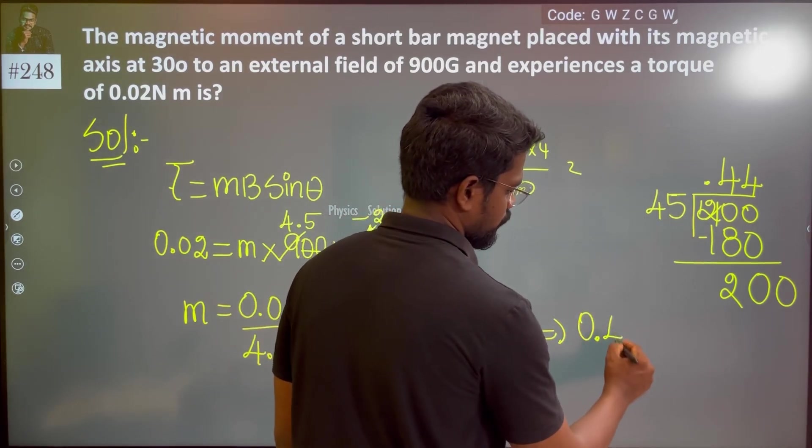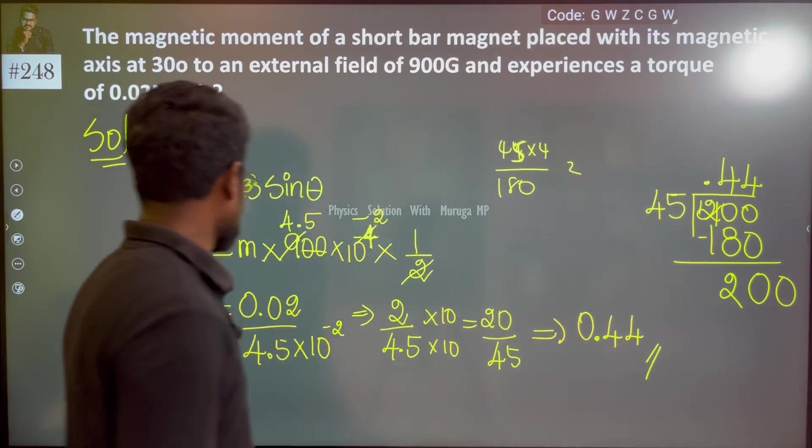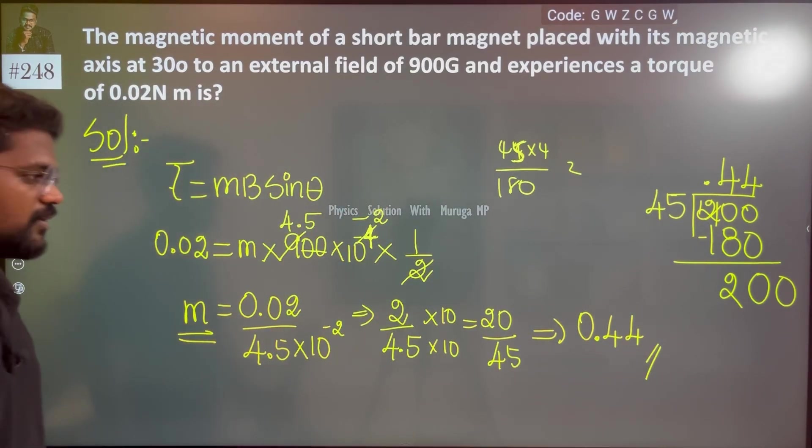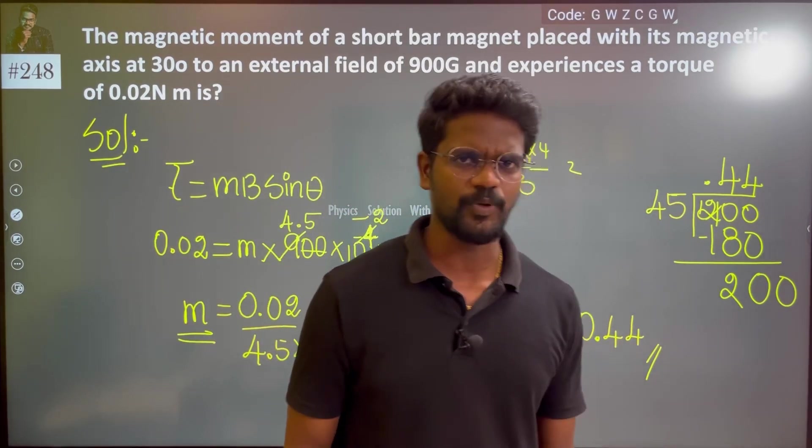The answer continues as 0.4444 repeating, which is your magnetic moment M. So 0.44 is the exact answer. This is a simple problem.